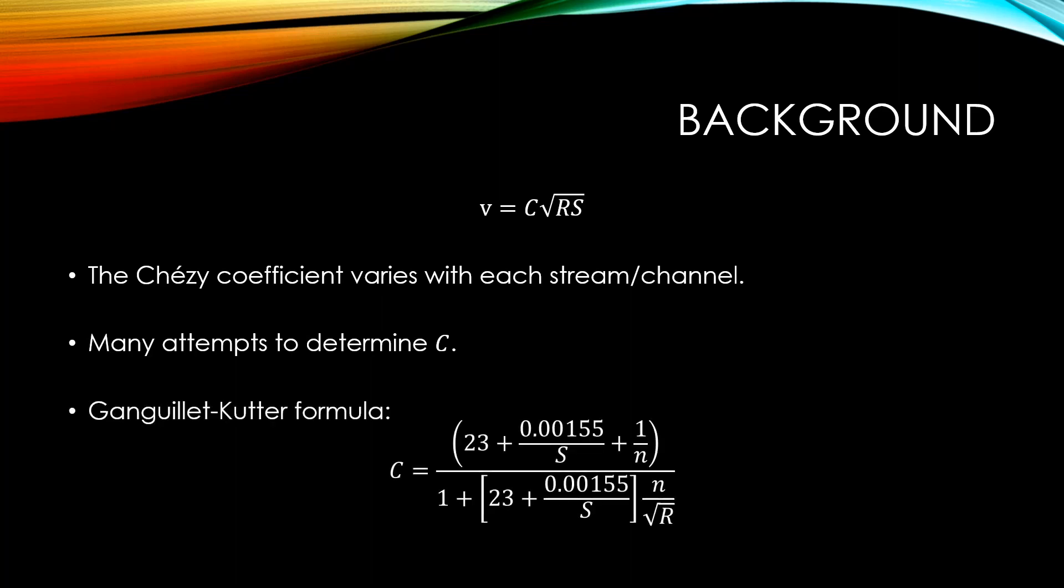One such attempt was detailed by Ganguillet and Kutter and resulted in the formula shown in the slide. We're not going to go into details of this formula. However, note a couple of things. The Chezy coefficient is seen to be a function of the longitudinal slope s, the hydraulic radius r, and a new term n. This n term came to be known as Kutter's Roughness Coefficient, and it depended on the material of the channel.